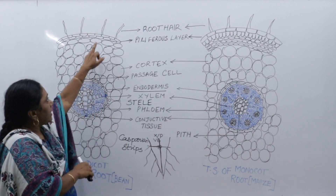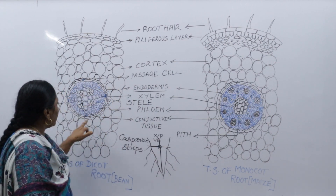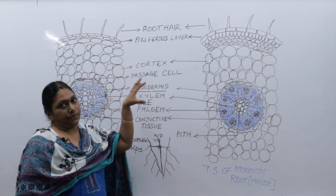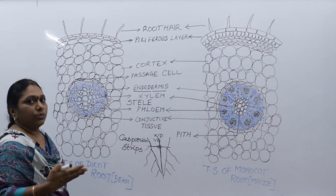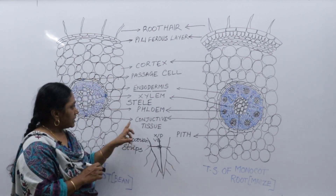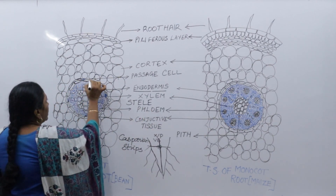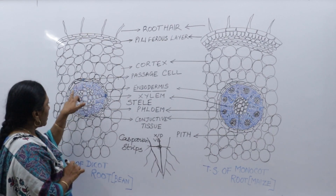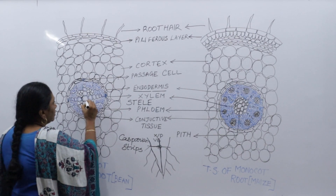After drawing the outermost layer and the multi-layered cortex, the next inner circle is the endodermis. Everything inside the endodermis is called as stele. Inside the stele, after the endodermis, we draw one single layer of cells called as pericycle. Inside that circle, the large cells are called as xylem.